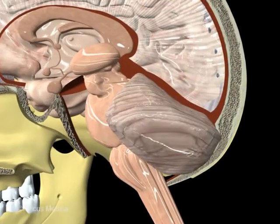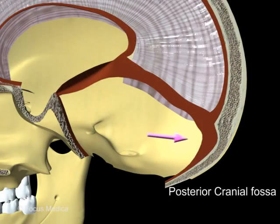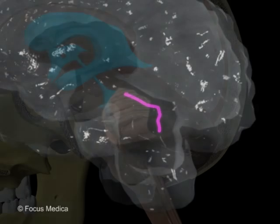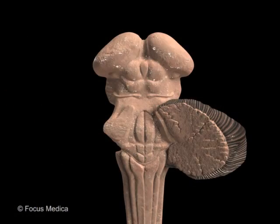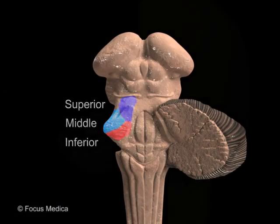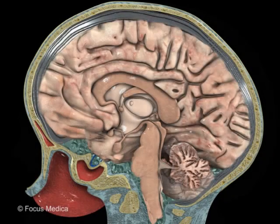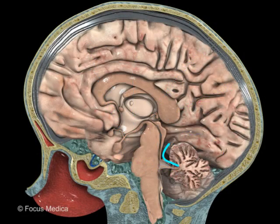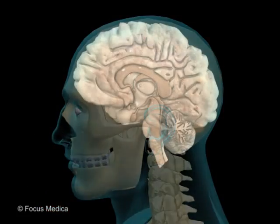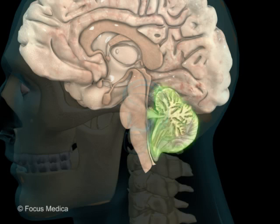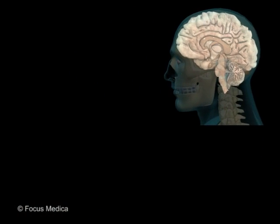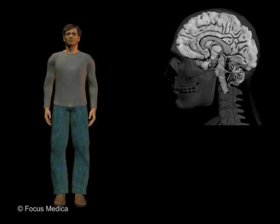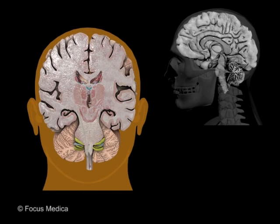The cerebellum is lodged in the posterior cranial fossa below the tentorium cerebelli. It also forms the roof of the fourth ventricle. It is connected to the brainstem by three peduncles — superior, middle, and inferior — which act as bridges through which the cerebellum maintains afferent and efferent connections with the rest of the brain. Chiari 1 malformation refers to a congenital hindbrain abnormality affecting the cerebellum. It is one of the most common but less severe forms of Chiari malformations, often diagnosed in adulthood, characterized by herniation of a part of the cerebellum known as the cerebellar tonsils.